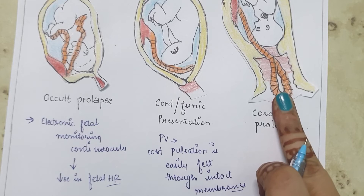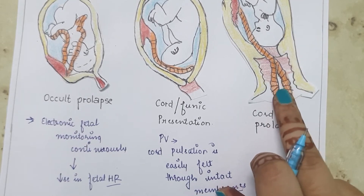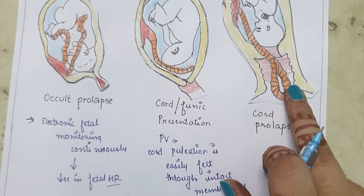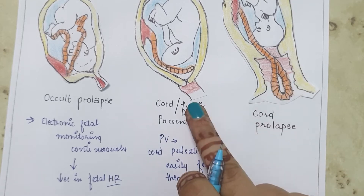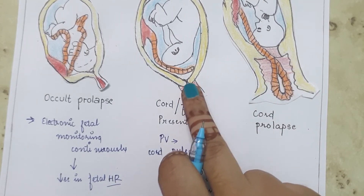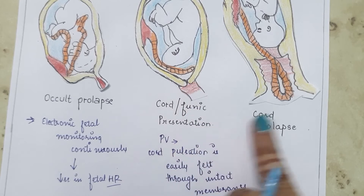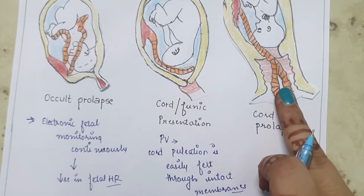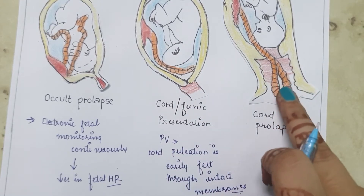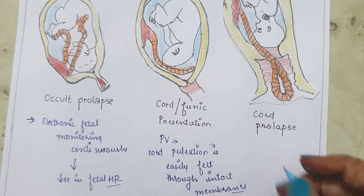Moving to our third type, cord prolapse. In this case, unlike cord presentation where we can only feel pulsation through intact membranes, we can directly palpate the umbilical cord with the fingers.